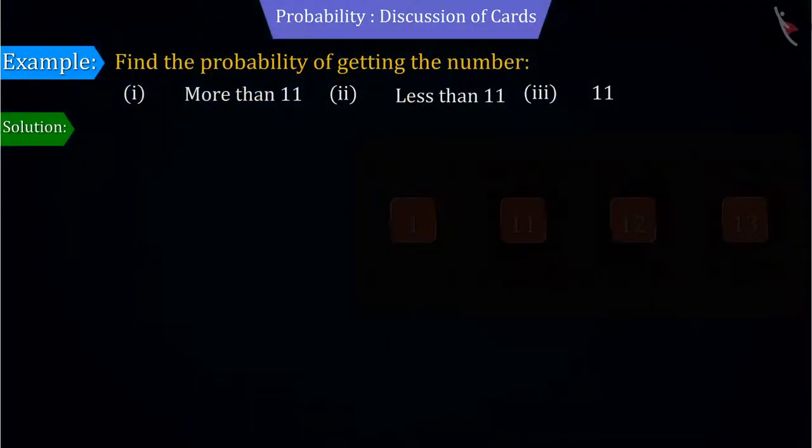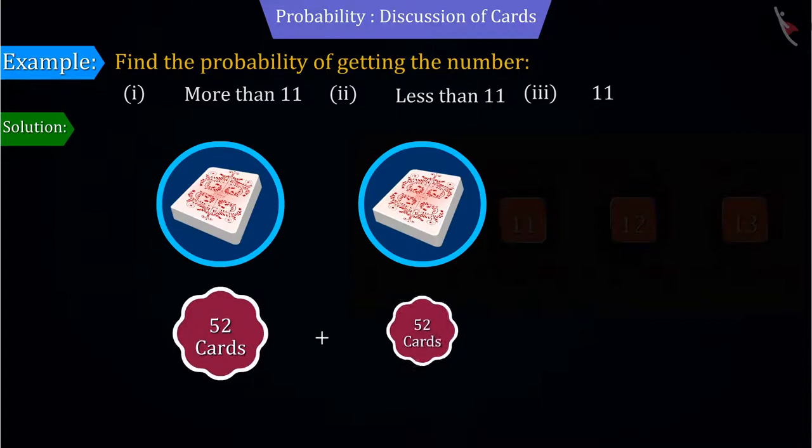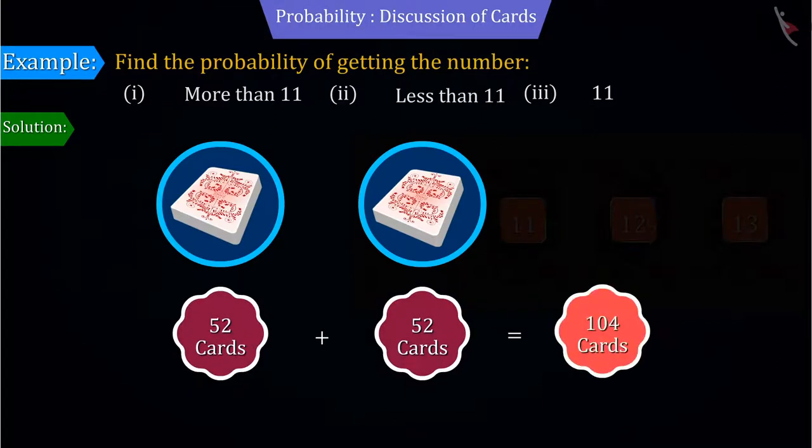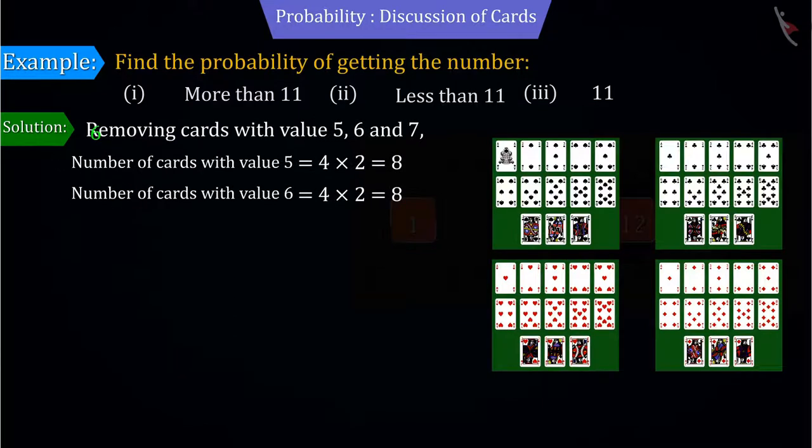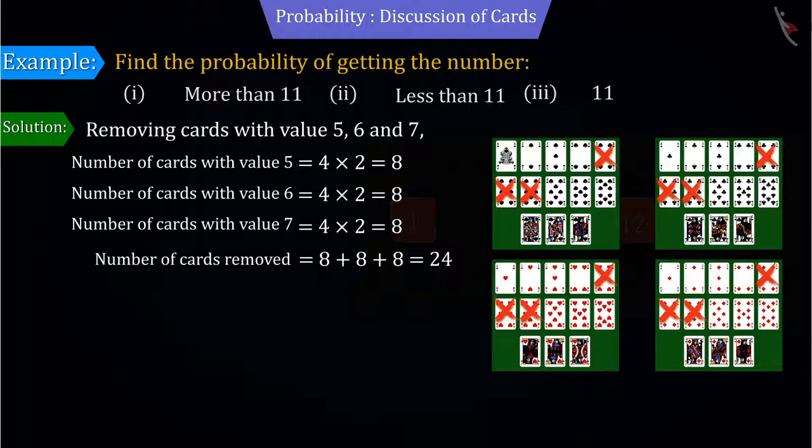According to the information given, we have two decks of cards totaling 104 cards. If all the cards having 5, 6 or 7 are removed from these cards, then what will be the total number of remaining cards?